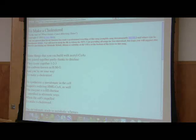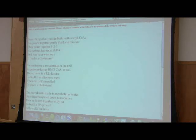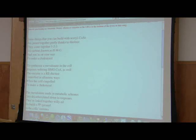Some things that you can build with acetyl-CoA are joined together partly thanks to thiolase. They come together. One, two, three, six carbons known as HMG. And you're on your way to make a cholesterol. To synthesize a mevalonate in the cell requires reducing HMG-CoA as well. The enzyme is a reductase controlled in allosteric ways when the cell's impelled to make a cholesterol.